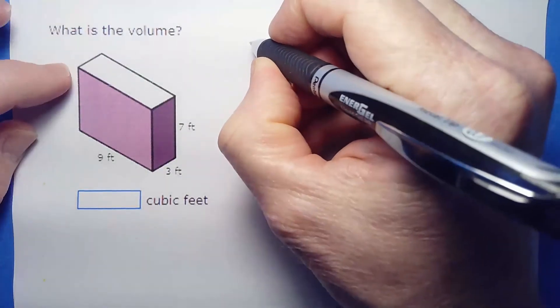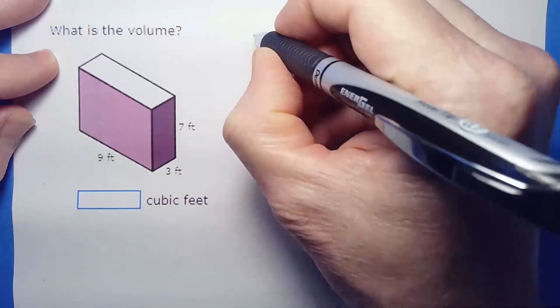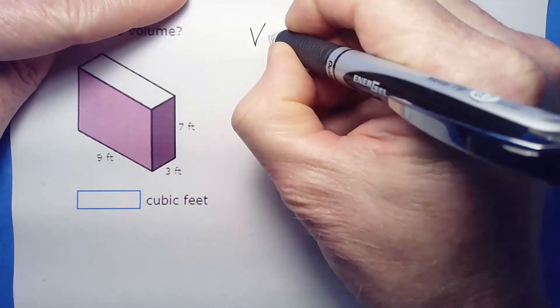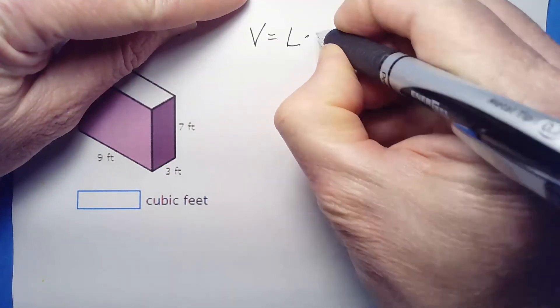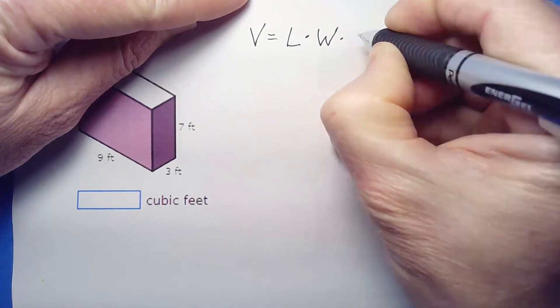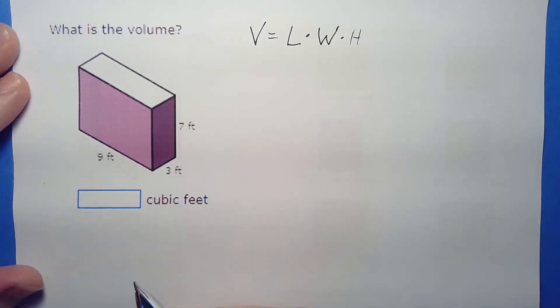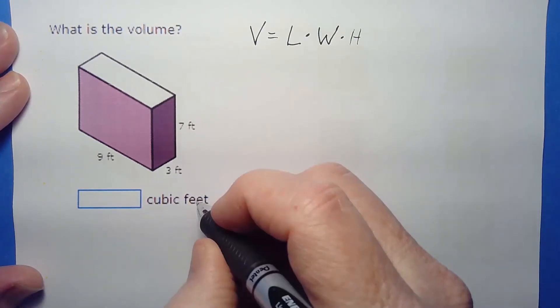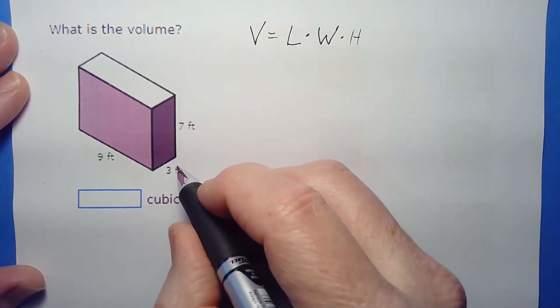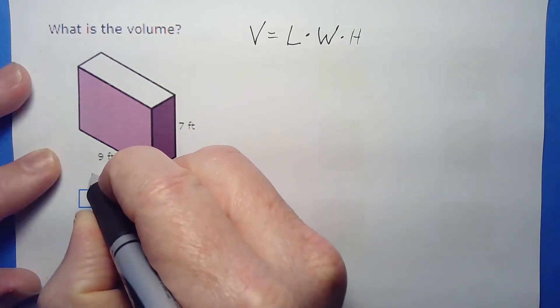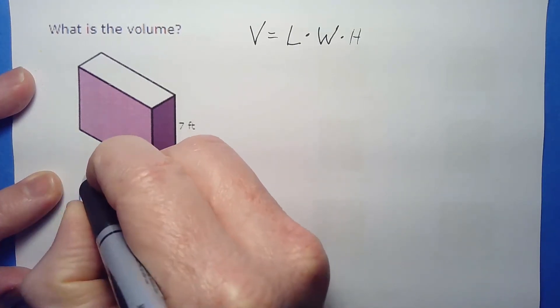Well, pretty easy. I hope this is a review, but just a quick reminder, right? If it's a box like this, it's just volume equals length times width times height.